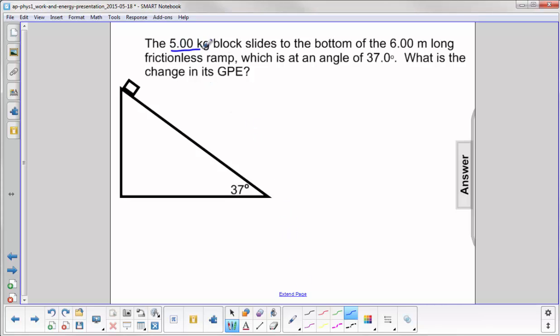A 5 kilogram block slides to the bottom of a 6 meter long frictionless ramp which is at an angle of 37 degrees.